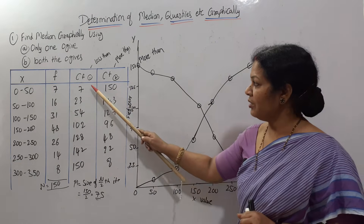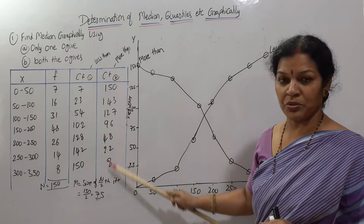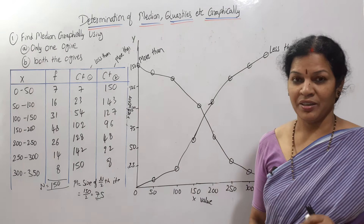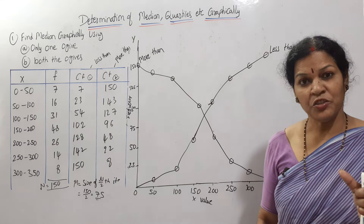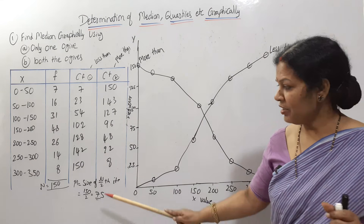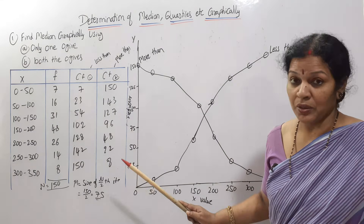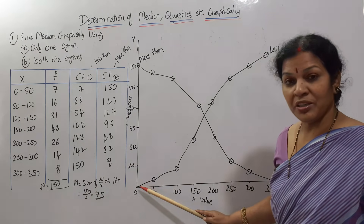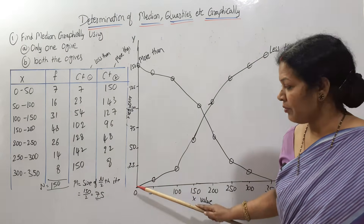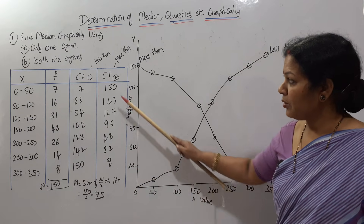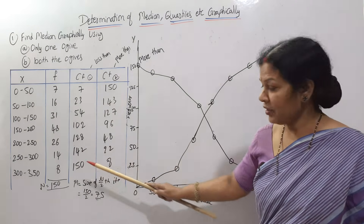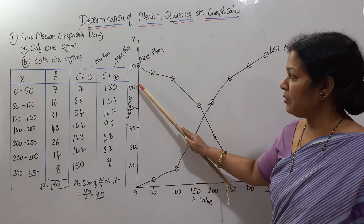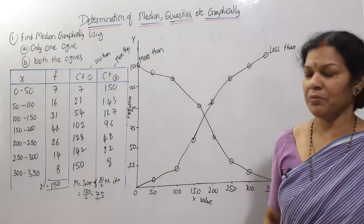On the y-axis, we take the cumulative frequency values. The minimum is 7 and the maximum is 150. I've chosen 1 centimeter equal to 25 units, giving a scale of 25, 50, 75, 100, 125, 150 — covering the maximum of 150. Both axes are now set up.